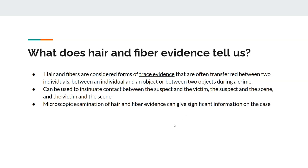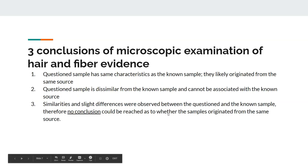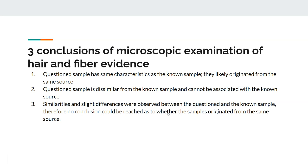Hair and fiber is a form of trace evidence, often transferred between victims and suspects when they come into contact, or between either victims or suspects and objects at a crime scene. You can prove contact between the victim and the suspect, or place them at the scene. From microscopic examination, we can conclude that a question sample and known exemplar match, do not match, or that there are some similarities and differences where no definitive conclusion can be reached — a yes, no, or maybe.